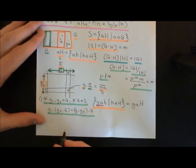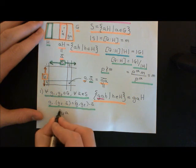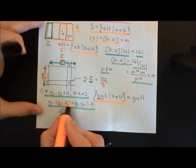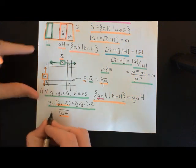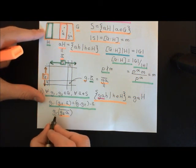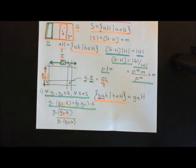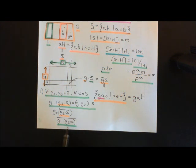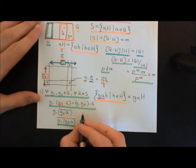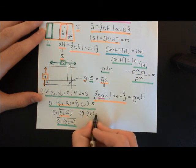Starting with the left-hand side: g2 · ā is the left coset containing the element g2∘a. Then when we act g1 on this answer, we compose g1 with g2∘a and take the left coset containing that. So the left-hand side gives the left coset containing g1∘(g2∘a). Now the right-hand side, applying the definition, gives the left coset containing (g1∘g2)∘a.